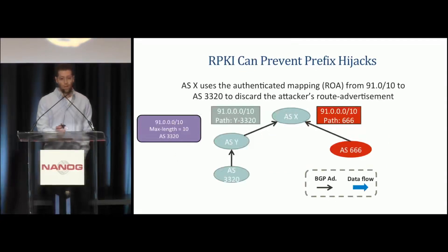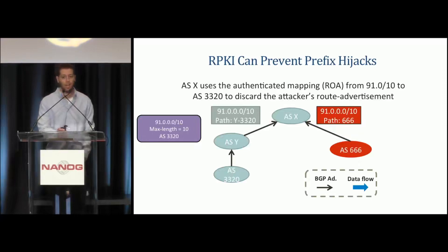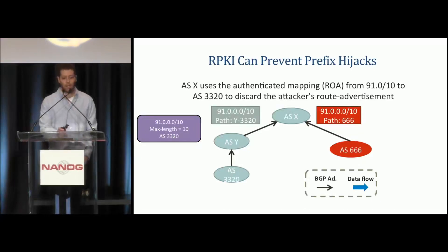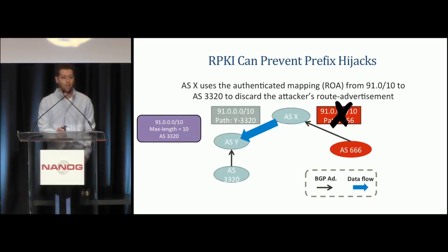Going back to my example: ASX now knows about this ROA, so it knows the only origin allowed to announce this prefix is AS3320. It can identify the attacker's prefix as invalid, discard it, and traffic will flow in the correct direction to ASY and then to the legitimate owner at AS3320.